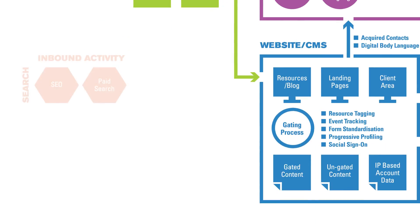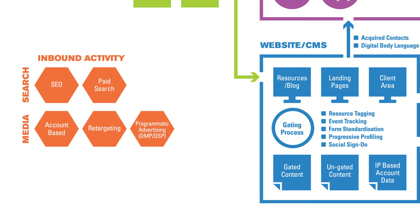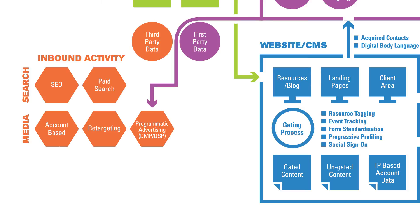Then we need to feed the funnel. Optimising organic search and paid search are to provide scale and drive conversion. Media can be executed with IP targeting, retargeting or programmatic through a DMP or DSP. You can also bring in first and third party data to further help refine targeting.